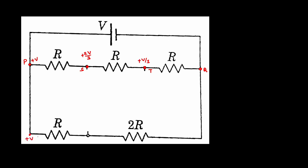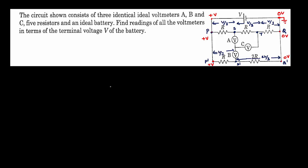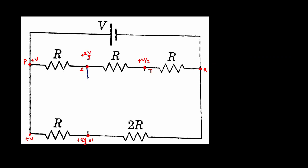Similarly, P dash would be at plus V volt. This point named as S dash would be at positive two V by three voltage. Now we will bring in the voltmeters. Suppose if I consider there is a voltmeter whose resistance — using this symbol — let's say R dash. R dash is the resistance of each of these ideal voltmeters. We know that R dash is a really large value and finite — we are considering it finite because we need a little bit of current to pass through it, or else there won't be any deflection shown.